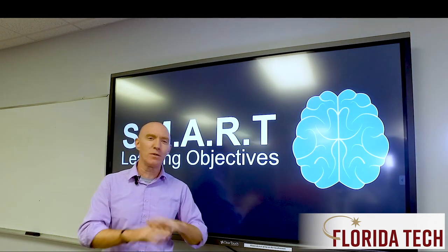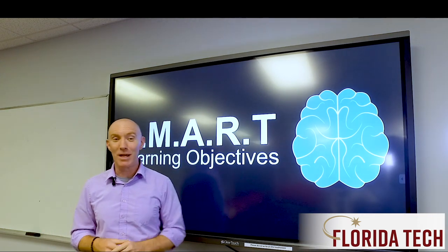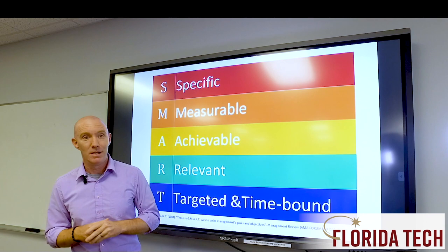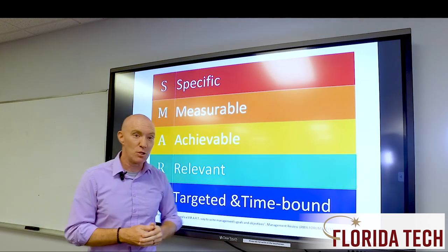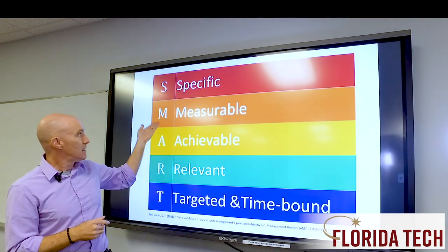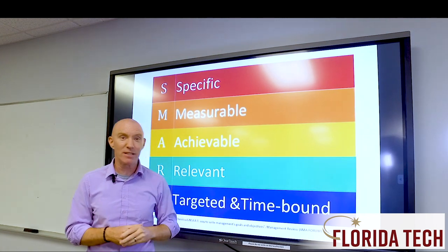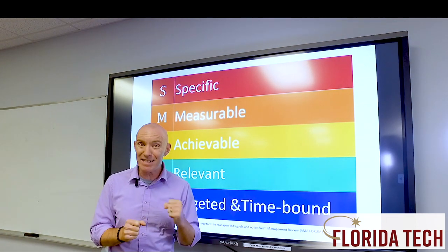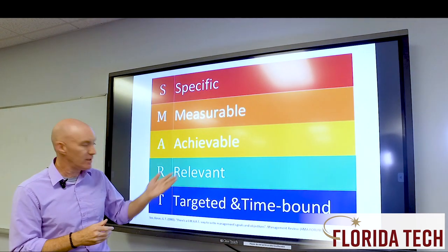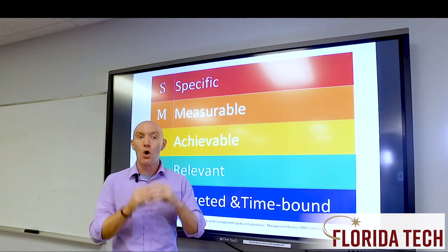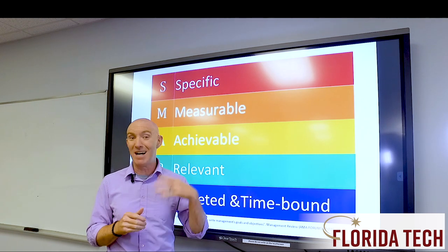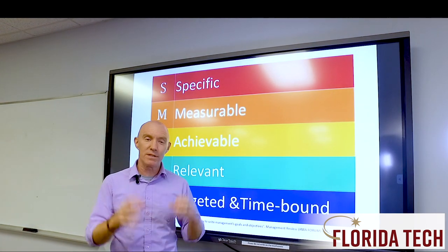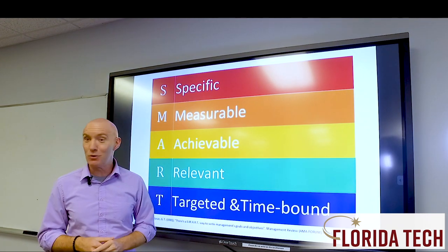Thankfully, there is a SMART way to write course objectives. The mnemonic SMART can be used to describe the elements of effective course objectives. S is for specific — what action will be performed. M is measurable — how will success be measured? Objectives should quantify the amount of change expected. A is achievable — can the objective be achieved within a given time frame with the available resources? R is for relevant — are you measuring the skills and knowledge relevant to the discipline of study? Are the objectives aligned with the instructional materials and assessments? T is for targeted and/or time-bound — when will this objective be achieved? For course objectives, the time frame is usually the end of the course.